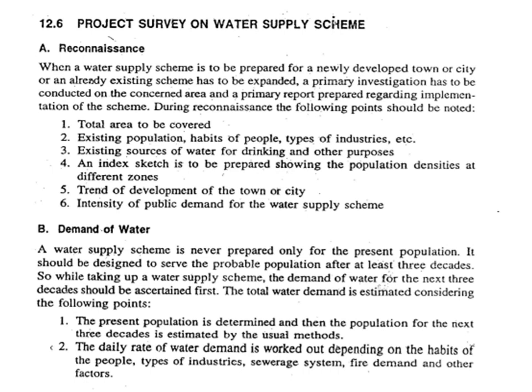Next we will see the project report on water supply scheme, starting with the economic survey. When a water supply scheme is to be prepared for a newly developed town or city, or an existing scheme has to be expanded, a primary investigation is conducted and a primary report is prepared. The following points should be noted: the total area to be covered, the existing population, habits of people, types of industries, etc.; existing sources of water for drinking and other purposes; an index sketch showing population density at different zones and trend of development of the town; and the intensity of public demand for the water supply scheme.